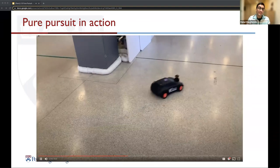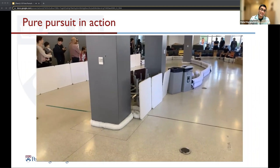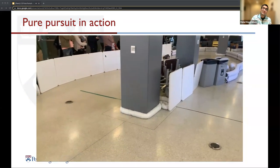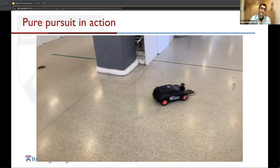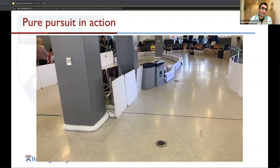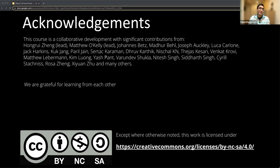This is an example of the race we had in Colombia a few years back — you can see the car speeding up along the straights and slowing down along the curves. That wraps up this lecture on Pure Pursuit. As always, this course is a team effort with contributions from a variety of individuals, and we're grateful for learning from each other. Now we can go into the lab component.